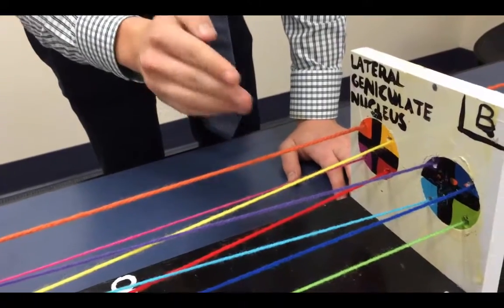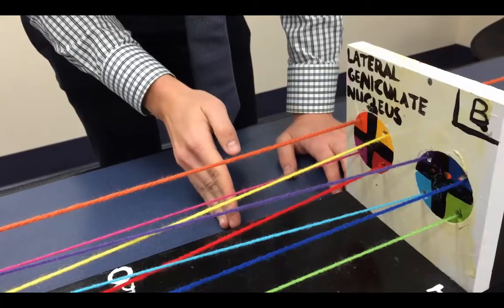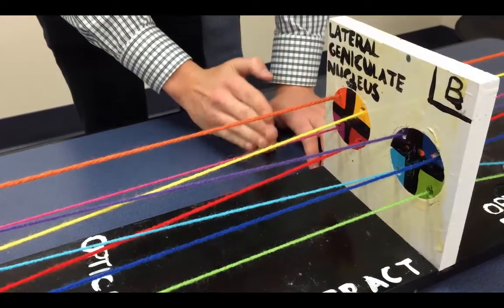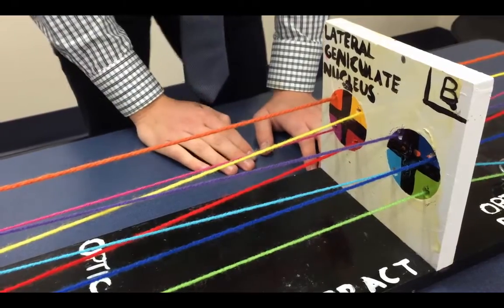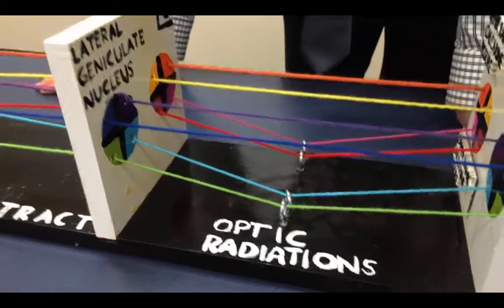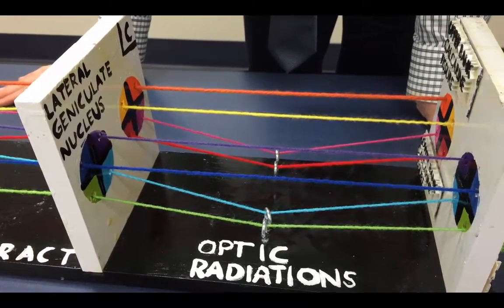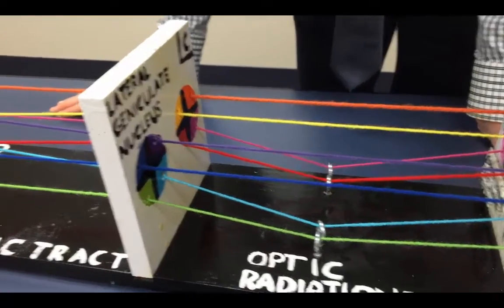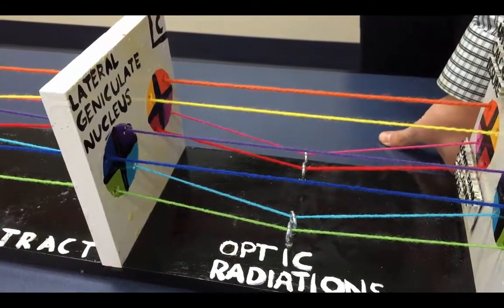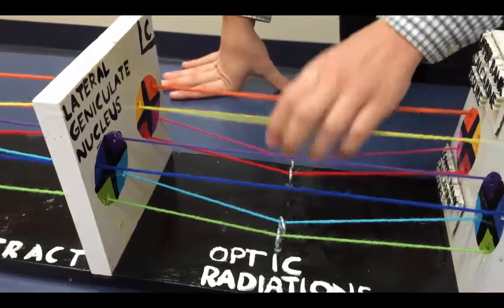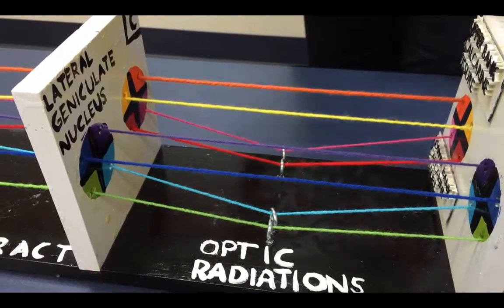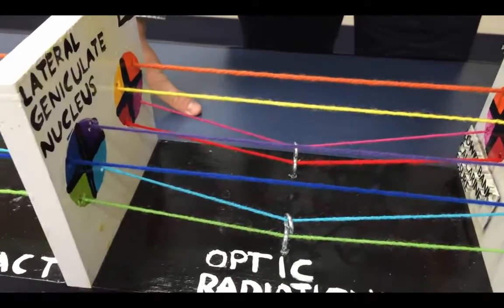The optic tract passes information to the lateral geniculate nucleus in the same orientation as after the optic chiasm. The thalamus is a sensory relay station for the brain, making this a key synapse. After the lateral geniculate nucleus, information is passed through the optic radiations. The left optic radiation controls information from the right side of our visual fields in both eyes, and the right optic radiation controls the left side — an important point we'll revisit in the visual pathology portion.